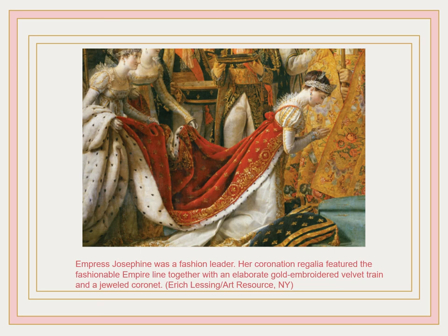Napoleon consolidated his power and was crowned Emperor in 1804. Over the next decade he instituted legal and educational reforms, reorganized the government to make it more efficient and honest, and extended French control over most of Europe — with the exception of Great Britain. By 1812 he attempted to take on Russia, but as any student of European history knows, you cannot win a war in Russia in winter, and his army starved and froze.